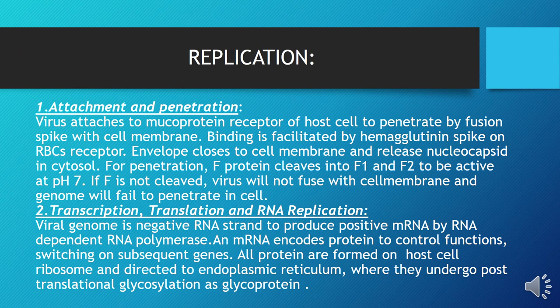Replication. It proceeds in the following steps. Number one: attachment and penetration, jis mein virus cell membrane ke saat fuse karega with the help of fusion spike, ya mucoprotein receptors ke saat bind karega. Is binding ko mazeed facilitate karne ke liye hemagglutinin spike RBCs receptor ke saat attach ho jaye ga. Phir envelope cell membrane ki taraf move karega, envelope ki uncoating ho jaye gi, aur nucleocapsid cytosol ke andar release ho jaye ga. Penetration ke liye yeh bhi lazmi hai ke F-protein cleave ho into F1 and F2 to acquire active status.